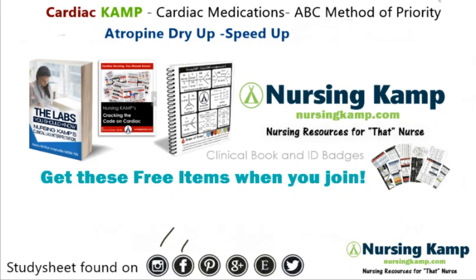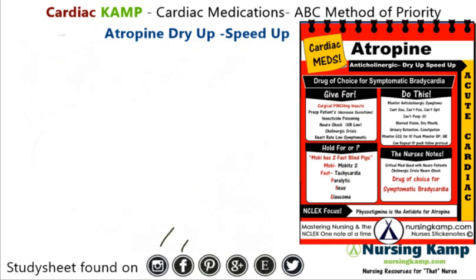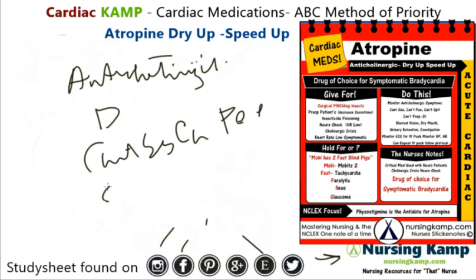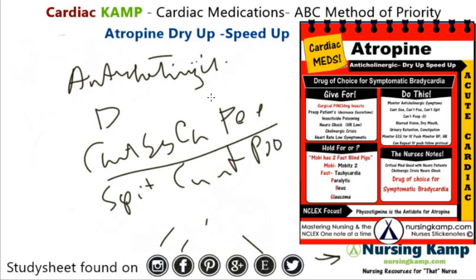Hello nurses, this is Kevin with nursingcamp.com and these are my scribble notes on nursing and the NCLEX. Today's focus is going to be on atropine — this sticky note found on Instagram, Facebook, Pinterest, Etsy, and nursingcamp.com. Atropine is an anticholinergic, a type of medication that will dry a patient up. The mnemonic is: can't see, can't pee, can't spit, and can't poop — so it dries them up.